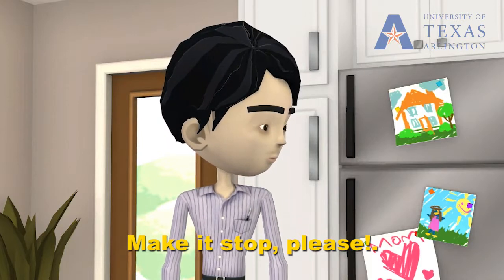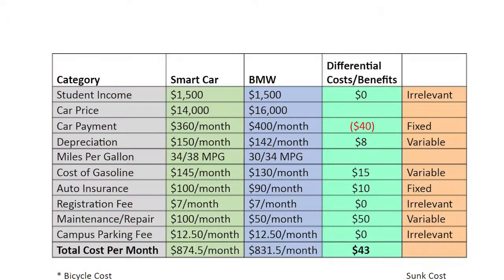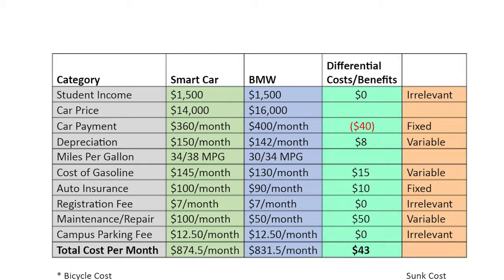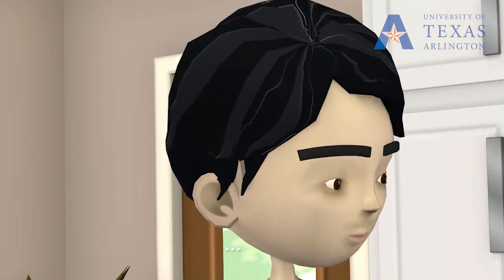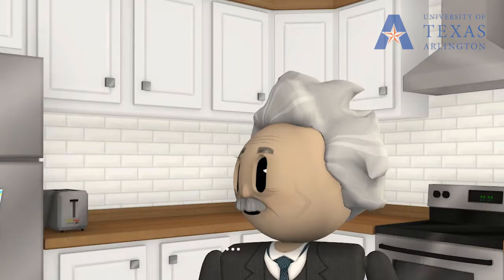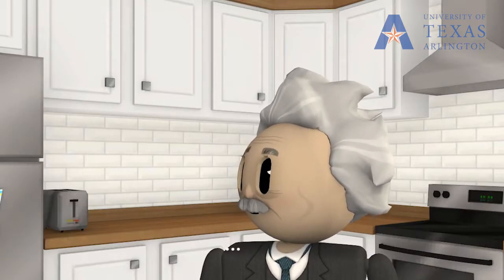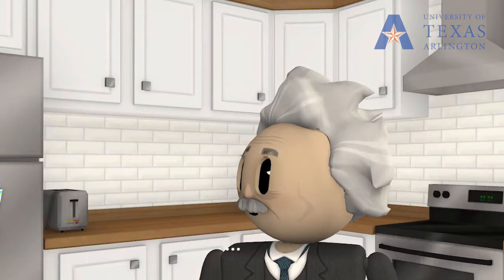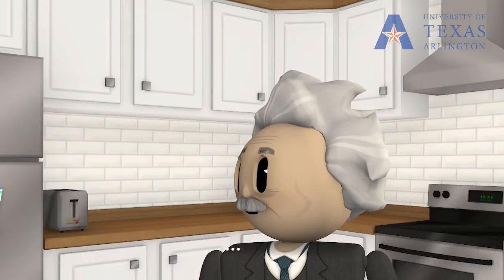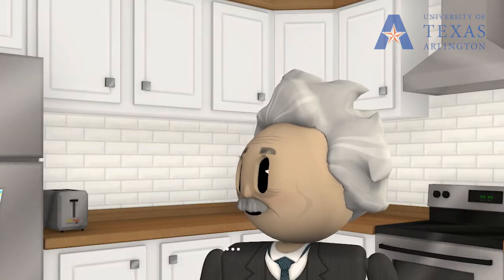Let me explain the difference between relevant and irrelevant cost. Relevant cost makes a difference in terms of making a decision. For example, the car payment is a fixed cost and it's relevant. Depreciation is a fixed cost and also relevant. The cost of gasoline is variable and it's relevant. The campus parking fee is irrelevant to this decision because that cost is the same for both cars. And remember, the bicycle you're riding is a sunk cost — you've already paid for it and it doesn't affect the decision you're making here.